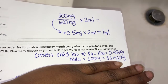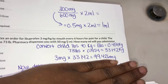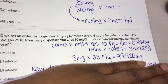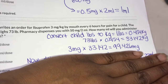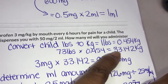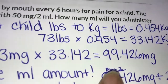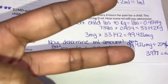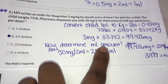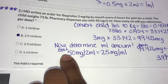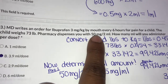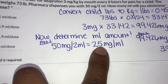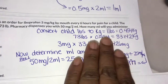Now that you have 33.142 kg, you're going to multiply that by the 3 mg/kg dosage. You multiply 3 mg times 33.142 to get the total milligrams for the patient's weight, which gives you approximately 99.426 mg. That completes part one. Now you determine the ml amount — the pharmacy dispenses 50 mg per 2 ml, so you divide 50 by 2 to get 25 mg/ml. That part is done.